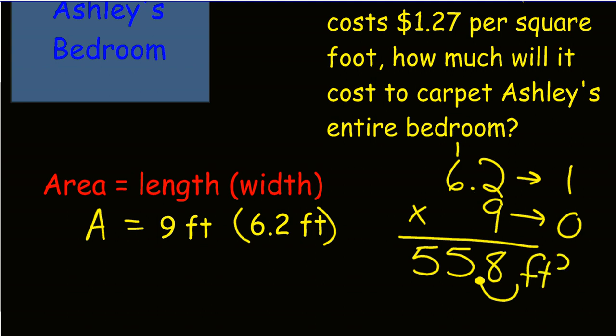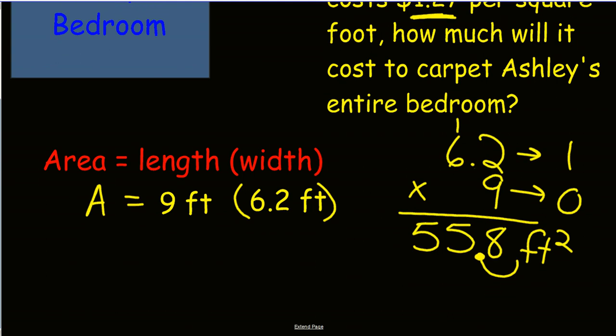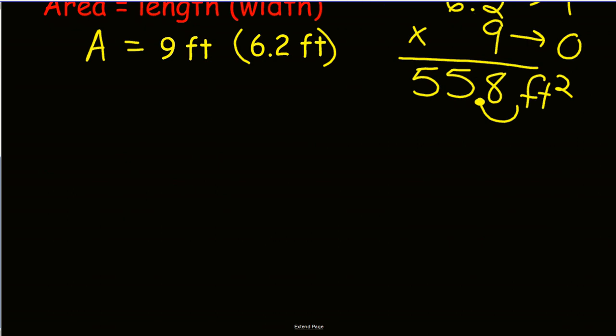So, that is how many square feet I have. Now, I have to remember that it's $1.27 per square foot. So, I have another set of decimals to multiply. Let's extend this page. $1.27 times 55 and 8 tenths. Remember, multiply just as if they're whole numbers. Again, I'll black out the decimals and multiply as if they're whole numbers.